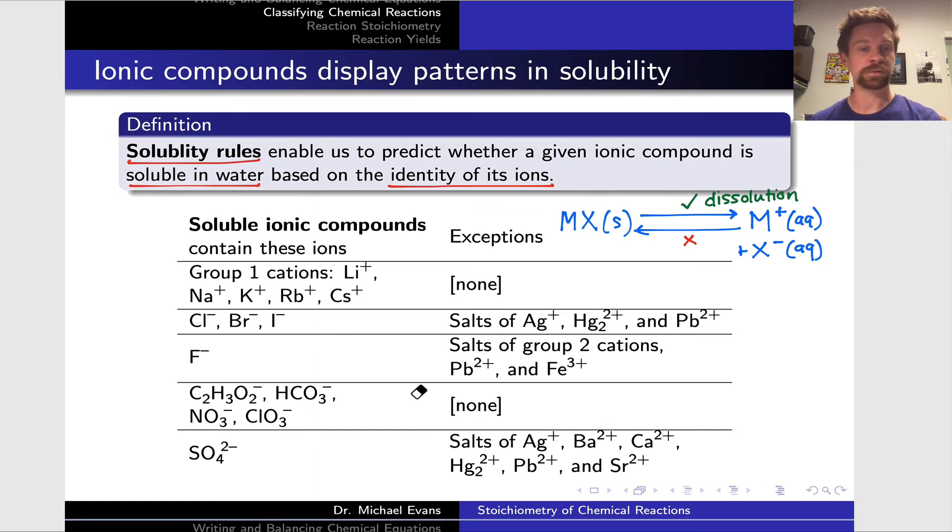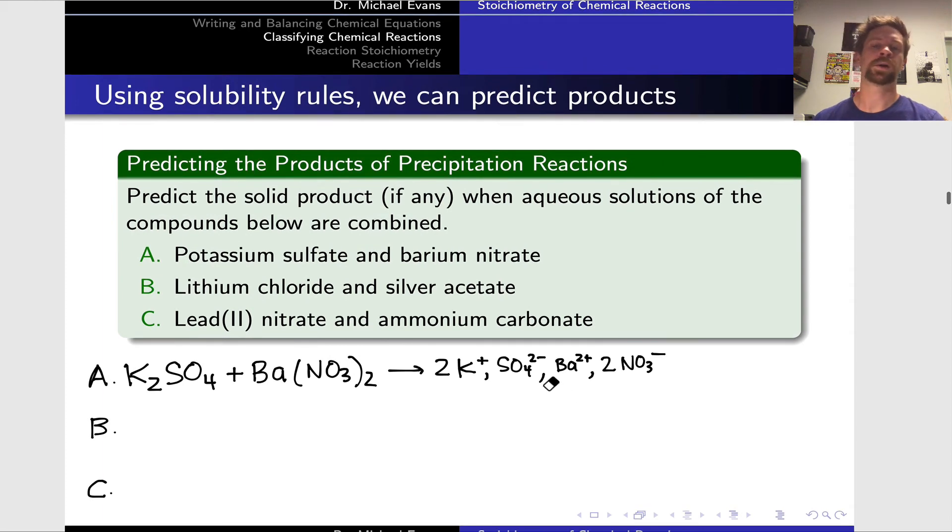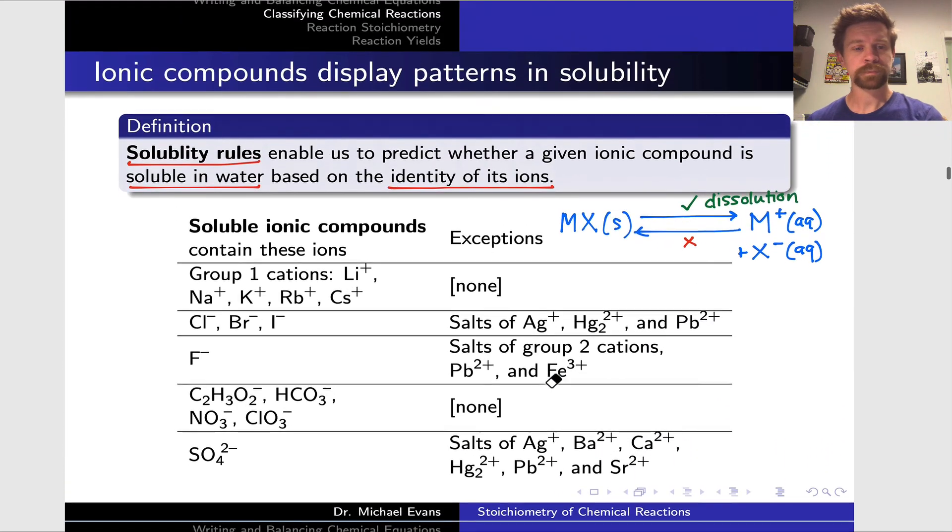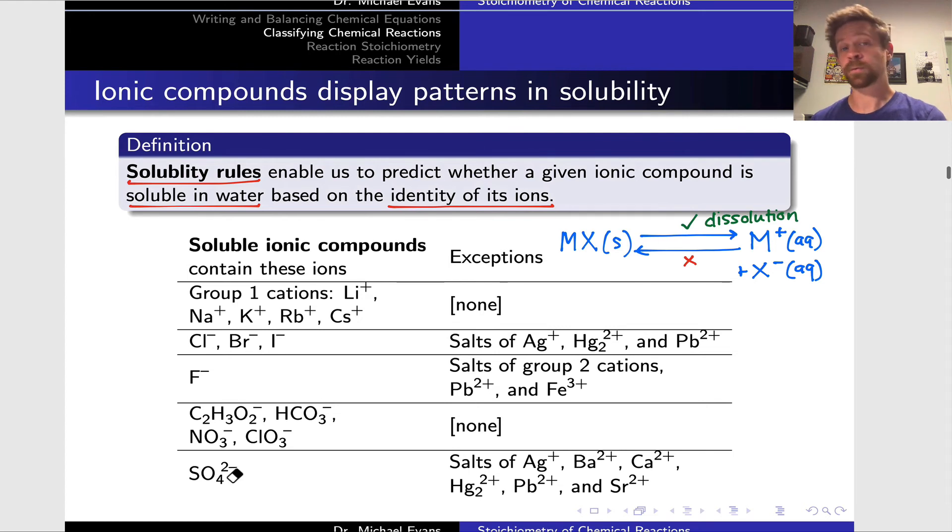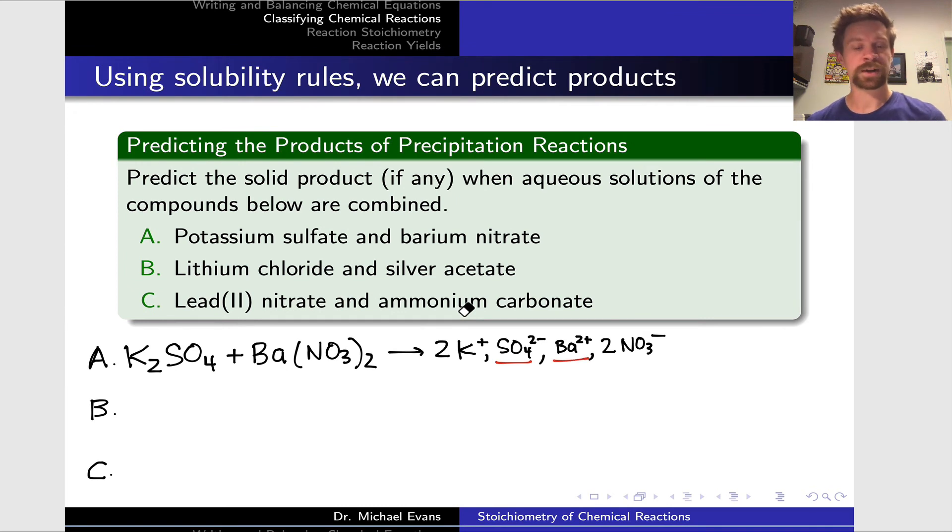Nitrate likewise has absolutely no insoluble salts, so the nitrate ion will also remain in solution. What about the barium and the sulfate? Let's see if we can find barium or sulfate in this table. SO42- salts are soluble except for salts of the following ions. In fact, we find Ba2+ in that list of exceptions. What this means is that BaSO4, Ba2+ SO42- forms an insoluble ionic compound. So these two ions will get together to form an insoluble precipitate of barium sulfate.